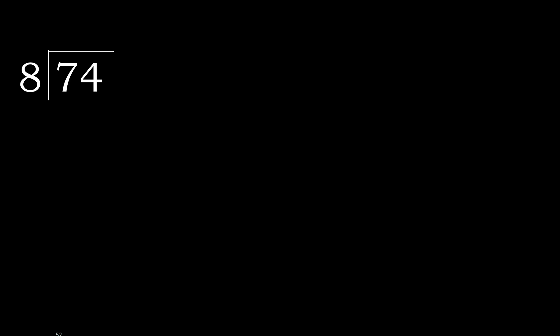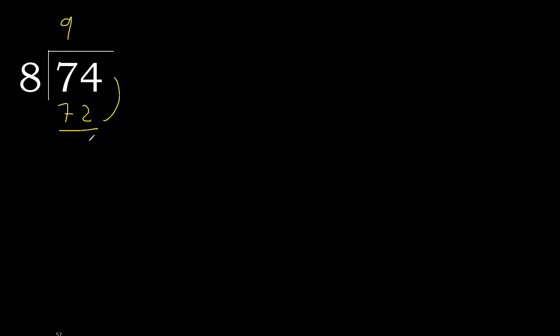74 divided by 8. 7 is less, therefore next. 74 is not less, therefore with 74 — 8 multiplied by which number is nearest to 74 but not greater? 8 multiplied by 9 is 72, which is not greater. Subtract.